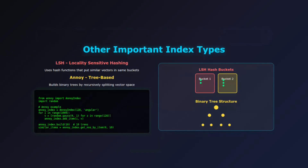Let's quickly cover a few other important index types you might encounter. LSH, locality-sensitive hashing, uses hash functions that put similar vectors into the same buckets — it's probabilistic and works well for binary or very high-dimensional data. Tree-based methods, like Annoy, build binary trees by recursively splitting the vector space; each leaf contains a small set of vectors — they're deterministic and work well when you can afford the build time. Choose LSH for very high dimensions or binary data, Annoy when you need deterministic results, and ScaNN when you want Google-level optimization out of the box.